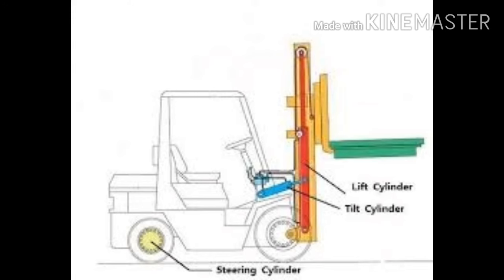When the control valve is put into the lowering position, the weight of the upright — loaded or empty — forces the fluid back through the return lines to the sump tank. A flow control valve located in the main line to the lift cylinders regulates the backflow so that lowering is smooth and gravity is not allowed to drop the load uncontrolled.